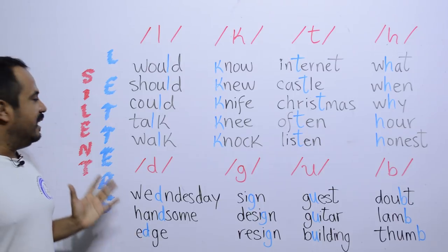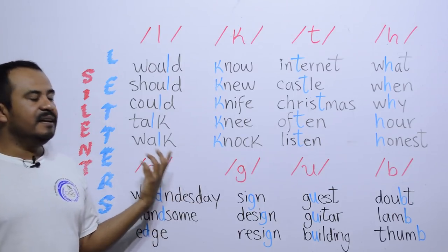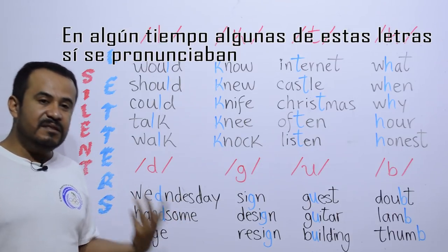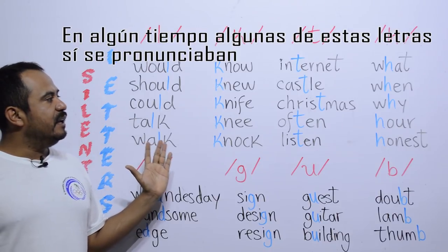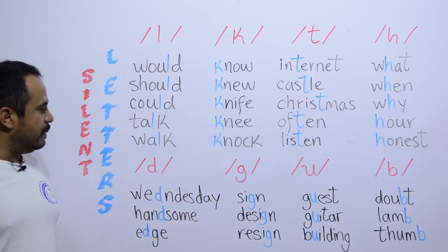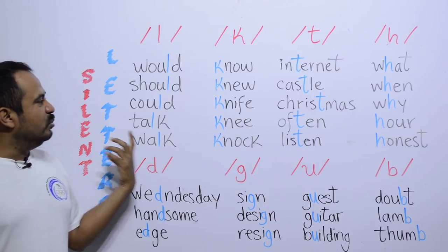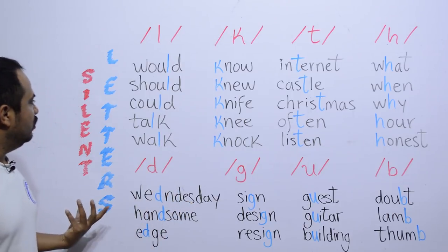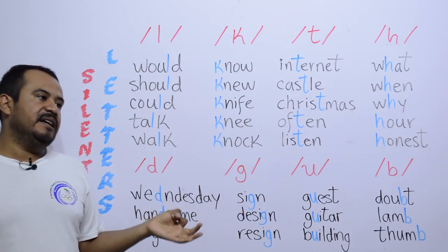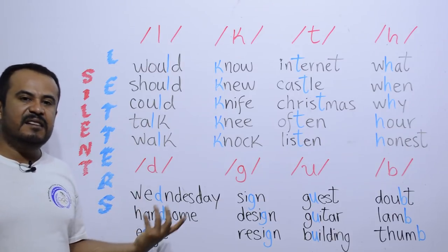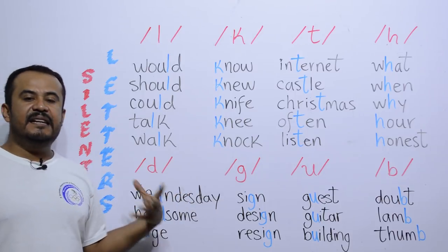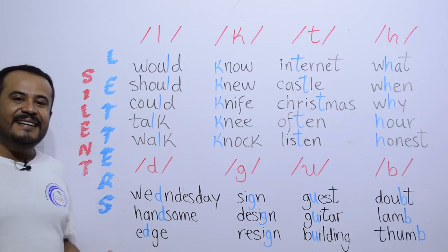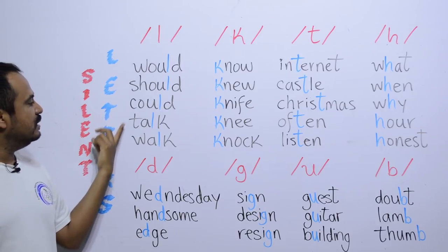Bueno, yo creo que eso no ocupa traducción. Antes de comenzar, déjenme decirles que yo pienso que en algún tiempo muy remoto estas palabras sí se pronunciaban — esa es mi conclusión. En algún tiempo muy remoto en la historia del idioma inglés sí se pronunciaban, pero muchas personas dejaron de hacerlo. Ya sabemos que los idiomas evolucionan; no es algo con reglas fijas. El mismo contacto con otros idiomas y personas hacía que evolucionaran. Vamos a comenzar — let's get started.